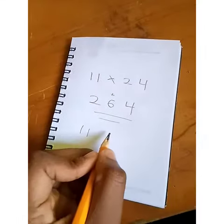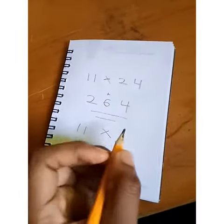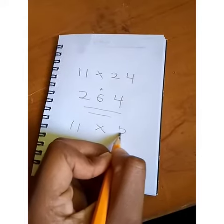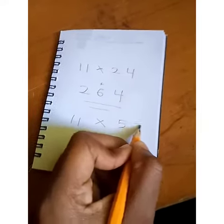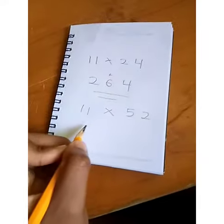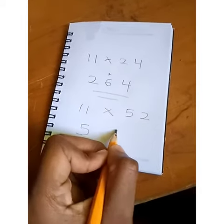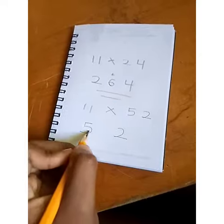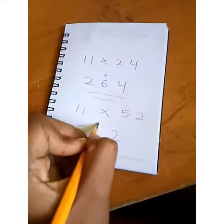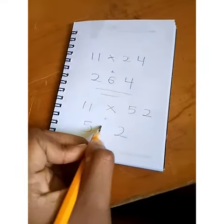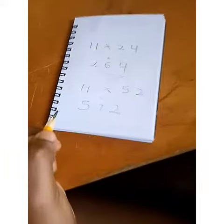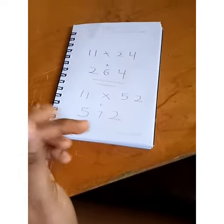Here we have 11 multiplied by 52. You put your 5 and 2 separate from each other and add them. That's 5 plus 2, which gives you 7 right in the middle. That is your answer.